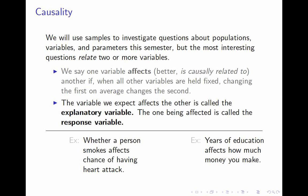The explanatory variable in the first case is whether the person smokes — a yes or no question, so it is categorical and in fact binary. In the second case, the thing potentially doing the affecting is years of education, which is clearly numerical. The response variable in the first case is tricky. You might have thought it was your chance of having a heart attack, which you might think is numerical — but that isn't correct, and it's really a linguistic issue I wanted to flag right away.